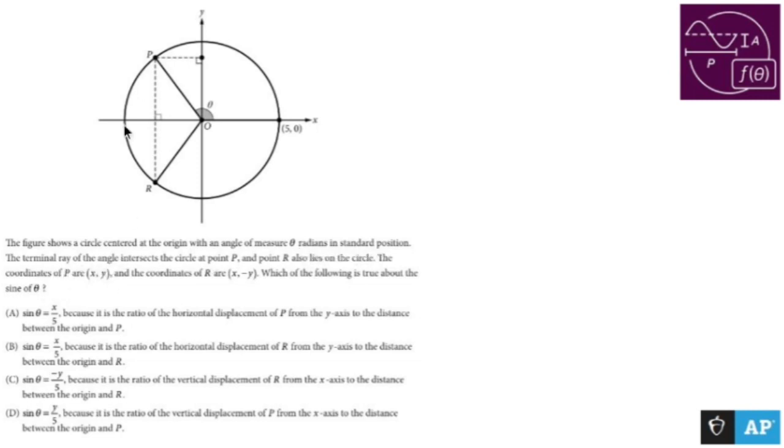The terminal ray of the angle intersects the circle at point P. So that's my terminal ray. And point R also lies on the circle right there. The coordinates of P are (x, y).